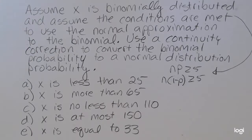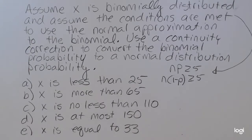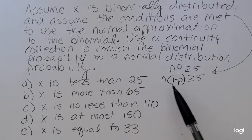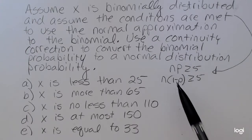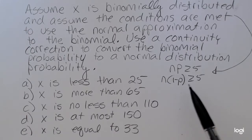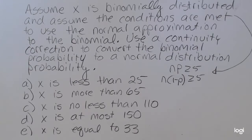In this example, I want to practice going from the binomial distribution to a normal distribution using the continuity correction. I'm going to assume that x is binomially distributed, meaning n times p is at least 5, and n times 1 minus p is at least 5. If both of those conditions are met, the shape of the binomial distribution will be reasonably bell-shaped, and we can use the normal distribution. Assuming those conditions are met, we want to use a continuity correction to convert the binomial probability statement to a normal distribution probability statement.